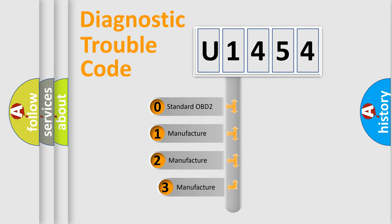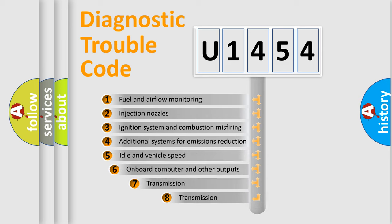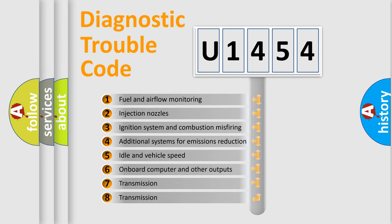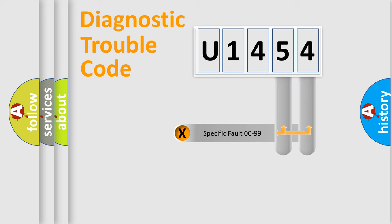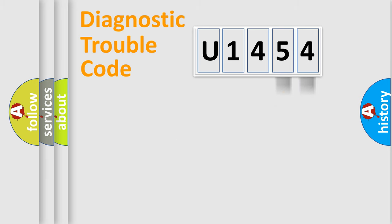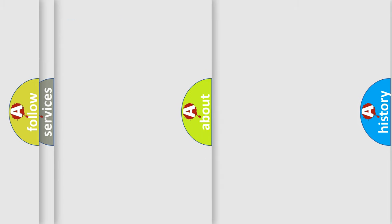If the second character is expressed as zero, it is a standardized error. In the case of numbers 1, 2, or 3, it is a more specific expression of a car-specific error. The third character specifies a subset of errors. This division is valid only for the standardized DTC code. Only the last two characters define the specific fault of the group, and this division is valid only if the second character code is expressed by the number zero.